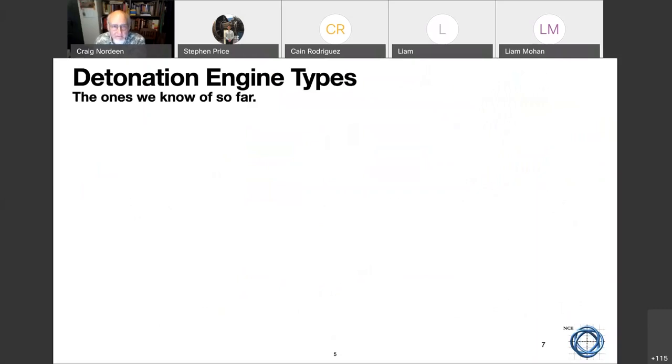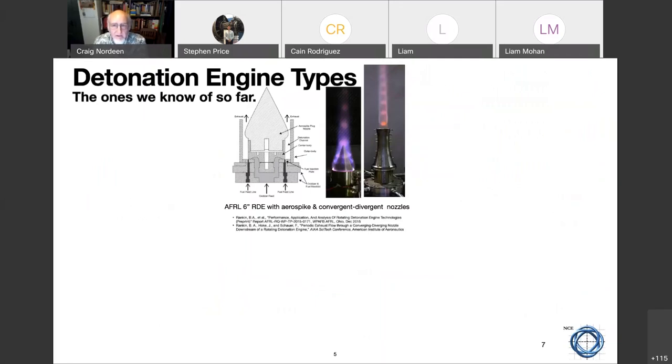There are a number of detonation engine types. We're still discovering how to configure this. These are some of the ones that we know of so far. This is the typical type of RDE. It's an annular chamber where the combustion occurs in this area. There's a nozzle up here. It can operate without a nozzle and still generate thrust. There are different types of nozzles. This is spike, air spike nozzle, and this is a conventional convergent divergent nozzle. Fuel and air comes in the bottom and burns in that area and runs around the center line going up to the middle.